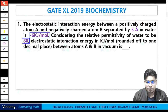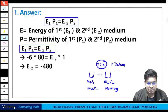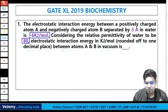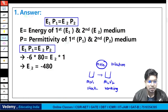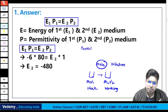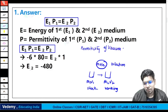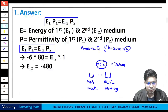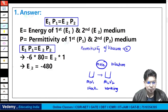They have given minus six kilojoule per mole as energy and permittivity is 80. We need to find the energy in vacuum. The permittivity of vacuum is 1. So E1 = minus 6 kJ/mol, P1 = 80. E2 is what we need to calculate, and P2 = 1. Putting these values: E2 = minus 480 kilojoule per mole.